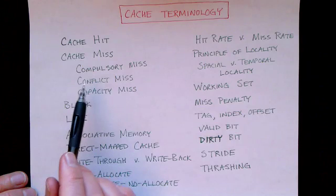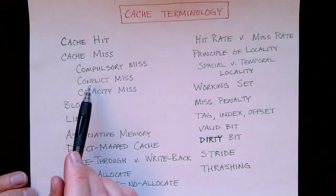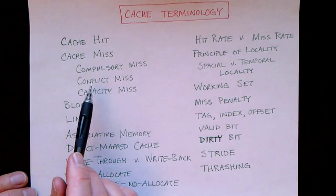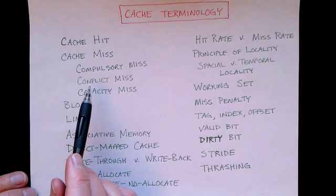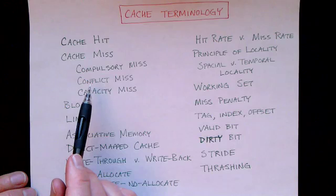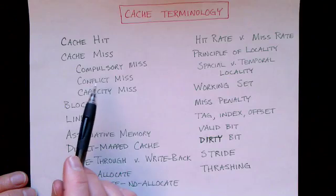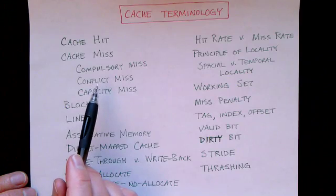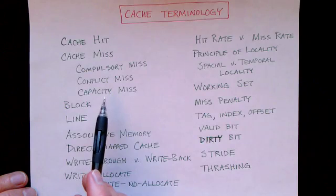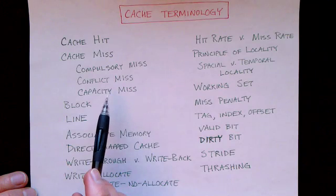If the data in the cache is in a location that conflicts with some other data in the working set, that means you can't get both of those pieces of data into the cache at the same time, so there's going to be a conflict miss. It may also be that your cache is just too small to contain the entire working set, which will cause capacity misses.